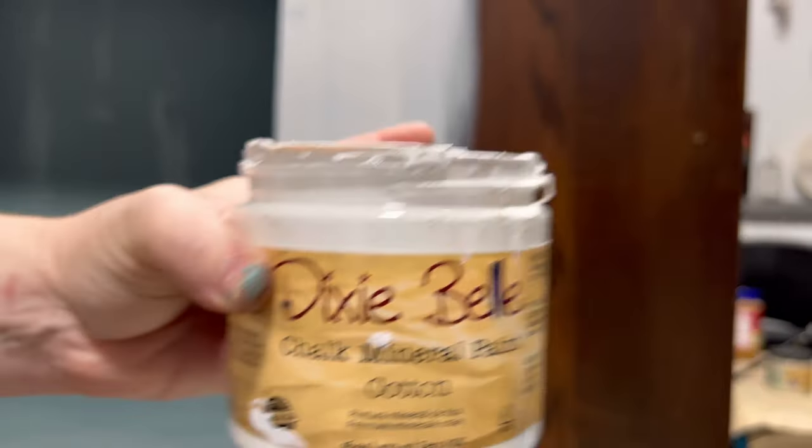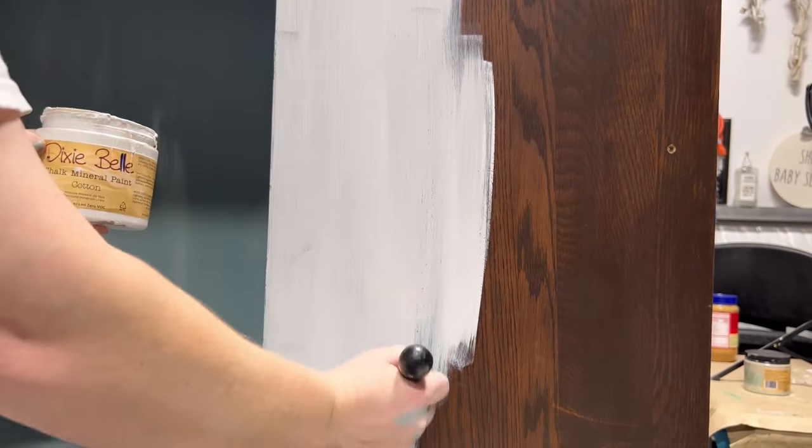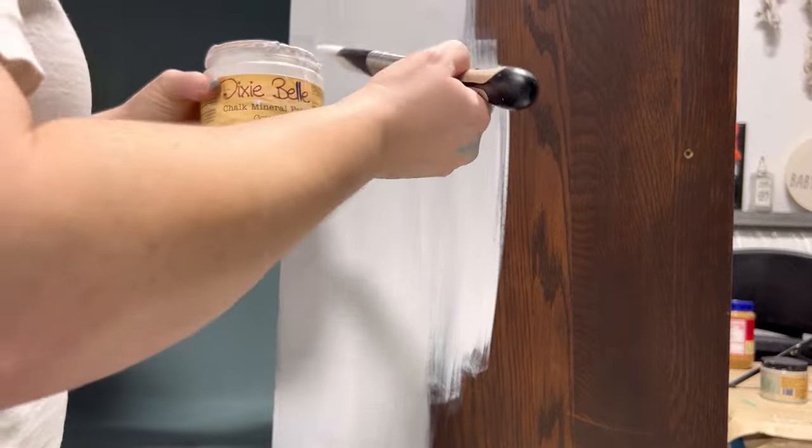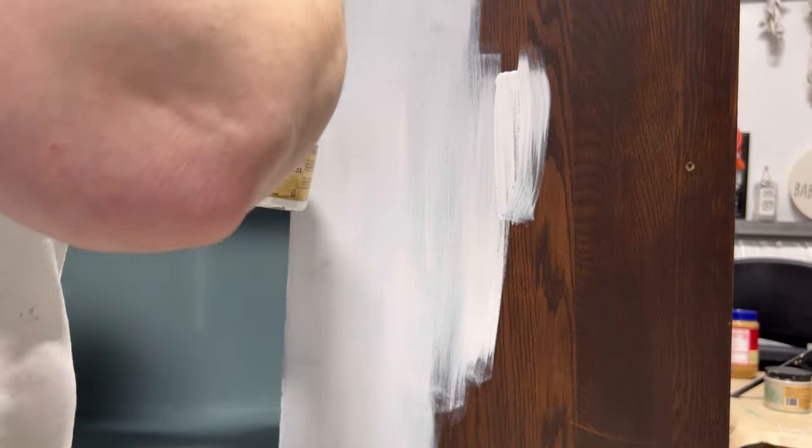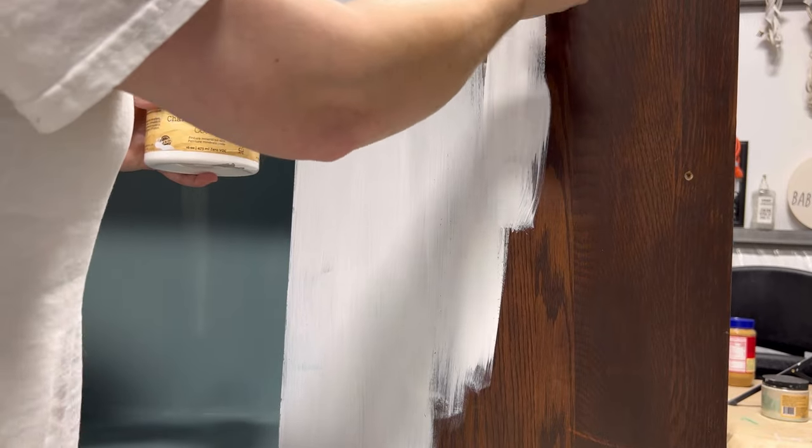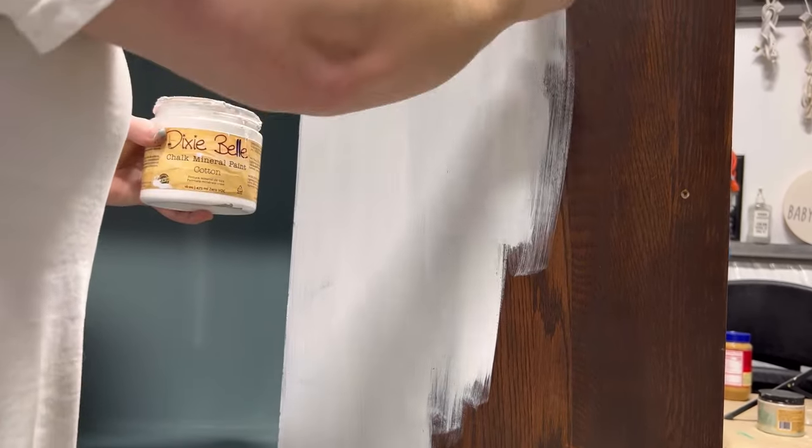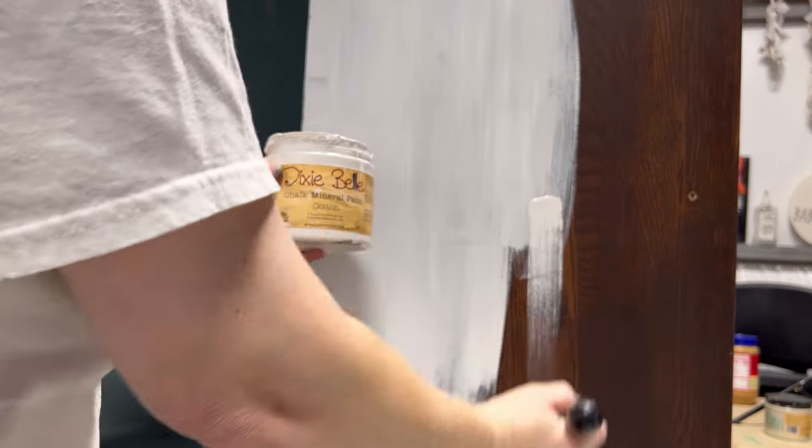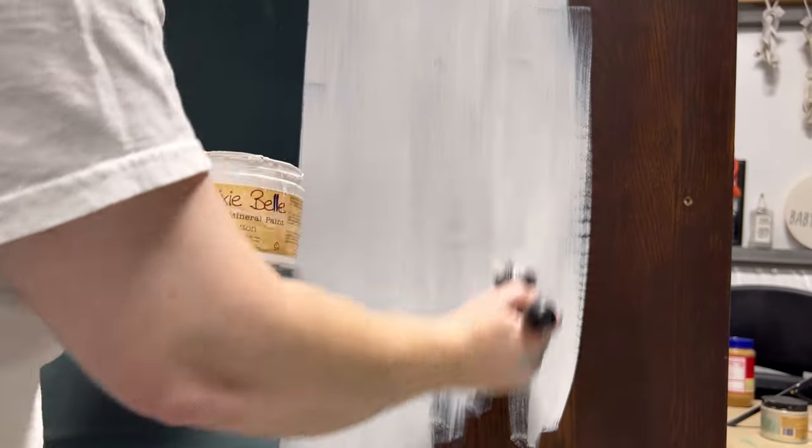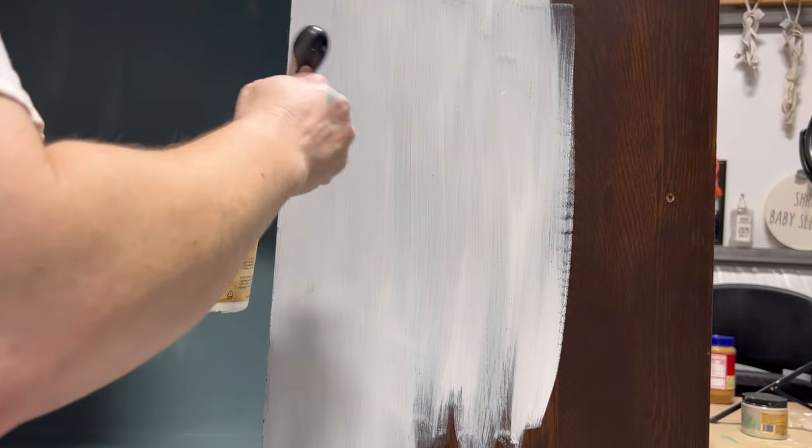For the back of the door, I decided I would decoupage it. We're going to use a rice paper from Dixie Bell, but first I want to apply a coat of paint because the paper I'm going to use is a little bit lighter. I don't like to put it over top of a dark background because that dark background can sometimes show through the paper once it gets wet when you're applying it and sealing it.